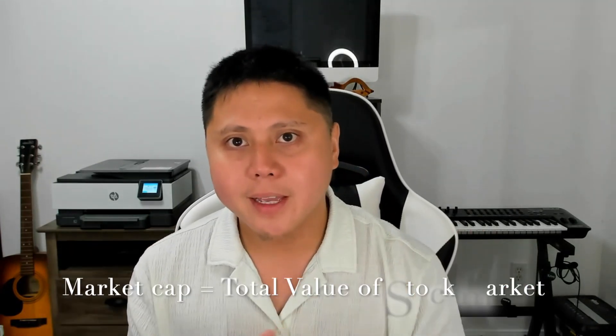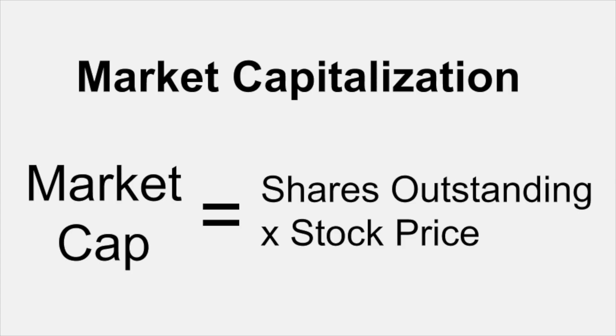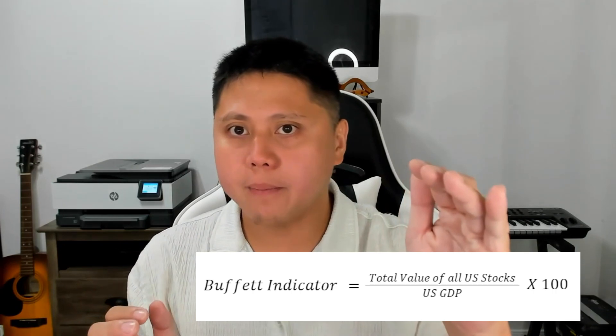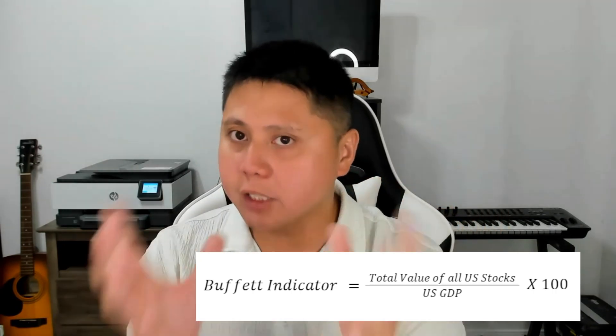What is the Buffett Indicator? The Buffett Indicator is essentially a ratio that compares the total value of the stock market to the country's GDP, gross domestic product. Here's how it works. You have the market cap — the total value of all publicly traded companies in the stock market, calculated by multiplying the stock price by the number of shares outstanding for each company. Then you have the GDP, the total value of all goods and services produced by a country in a given period, usually a year. The Buffett Indicator takes the total market cap and divides it by the GDP, giving us a ratio.